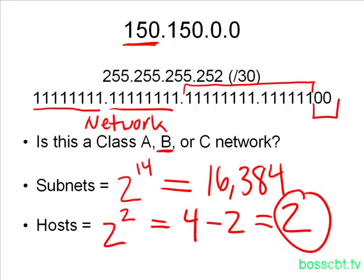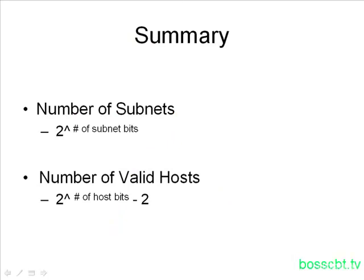That is the approach you can take in order to answer these two questions whenever you're looking at a classful network and applying a subnet mask — to find out how many subnets you're creating and how big each subnet is going to be, in other words how many hosts will be in each one. To summarize, we looked at these two formulas which are very useful for answering how many subnets you're creating and how many valid hosts will be in each one. Write out some network numbers — you can choose them randomly. Choose one or two class A's, B's, and C's, then choose a couple different subnet masks and walk through the process: determine the network bits, determine the subnet bits, and then determine the host bits. As long as you know those three pieces of information, you can use these formulas rather easily. Keep practicing, and thanks for watching.